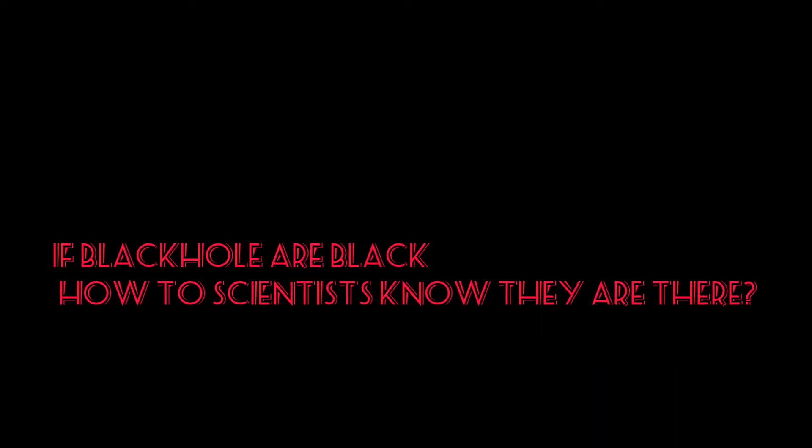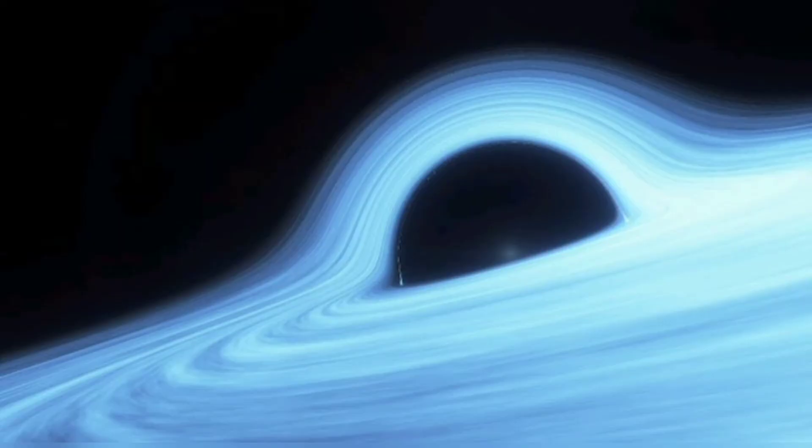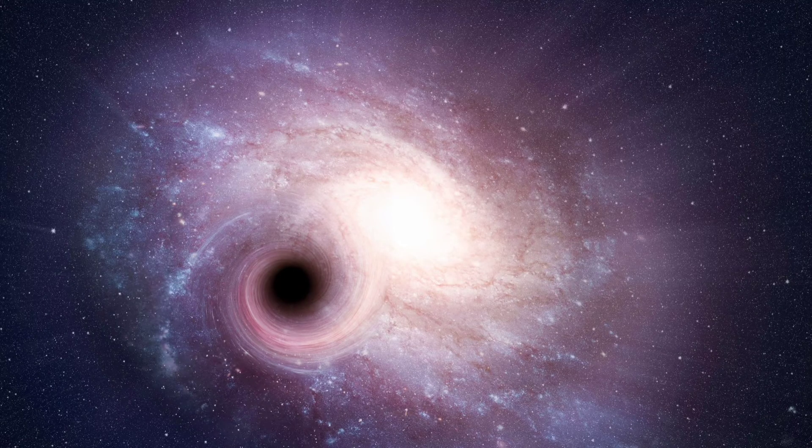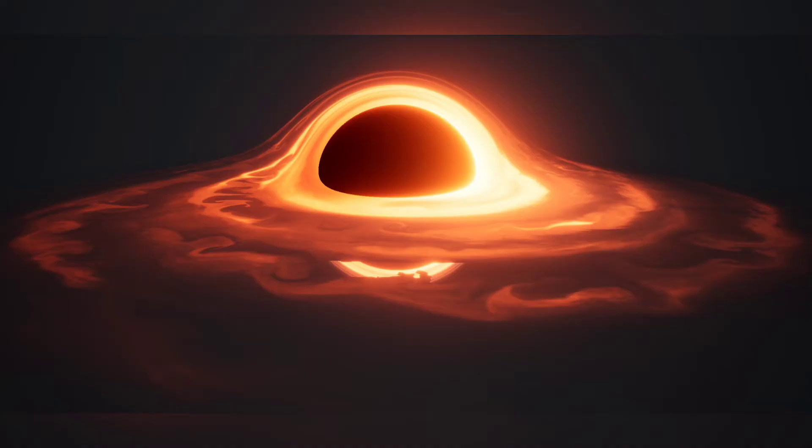If black holes are black, how do scientists know they are there? A black hole cannot be seen because strong gravity pulls all of the light into the middle of the black hole. But scientists can see how the strong gravity affects the stars and gas around the black hole.